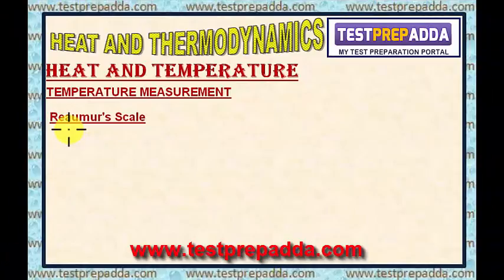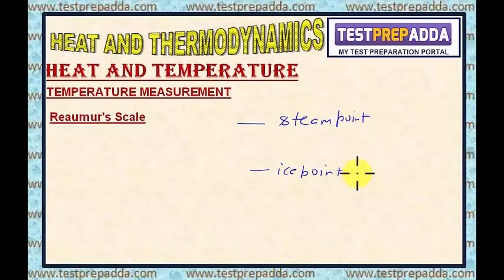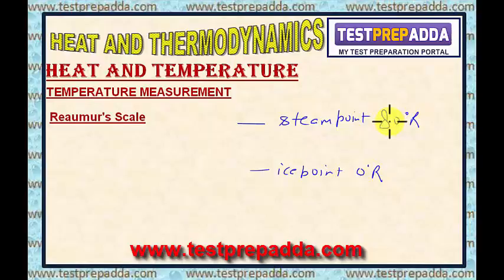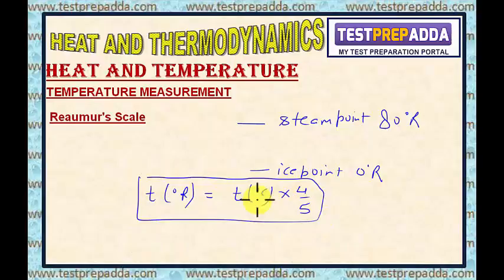Dear students, let me tell you about one more scale — the Réaumur scale. Here, the two reference points, ice point and steam point, are taken as 0° Réaumur and 80° Réaumur respectively. The relation between temperature in degree Réaumur and degree Celsius is: T°Réaumur = T°Celsius × (4/5). This is how we convert between degree Celsius and degree Réaumur.